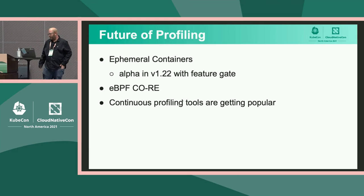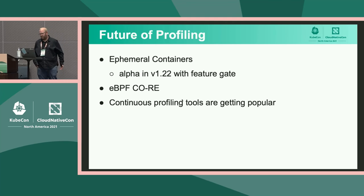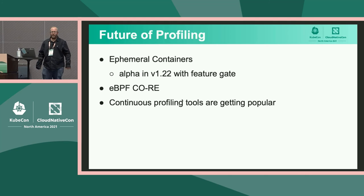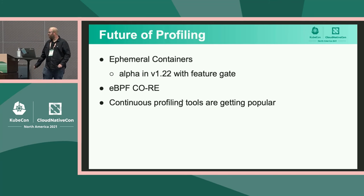The last thing I wanted to talk about is a few points for the future of profiling. The first is a new Kubernetes feature called ephemeral containers — already in alpha in version 1.22 with a feature gate. It brings native support to Kubernetes to attach a container into a running pod without all the workarounds I'm currently doing, making profiling much more accessible without needing host path or process ID namespaces.